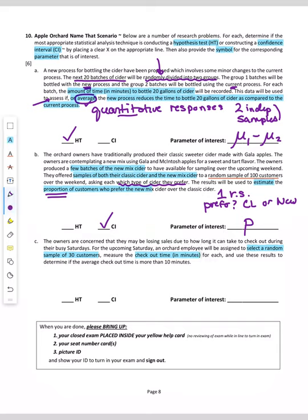We want to use these results to determine if the average checkout time is more than 10 minutes. One random sample of customers. We're measuring time, which is a quantitative response.